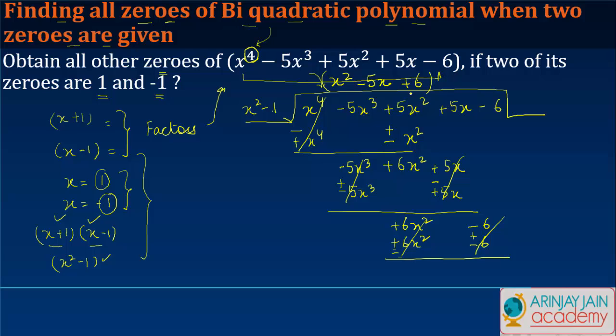So what do I get? I get x² - 5x + 6. This is the number if I just equate this with 0.